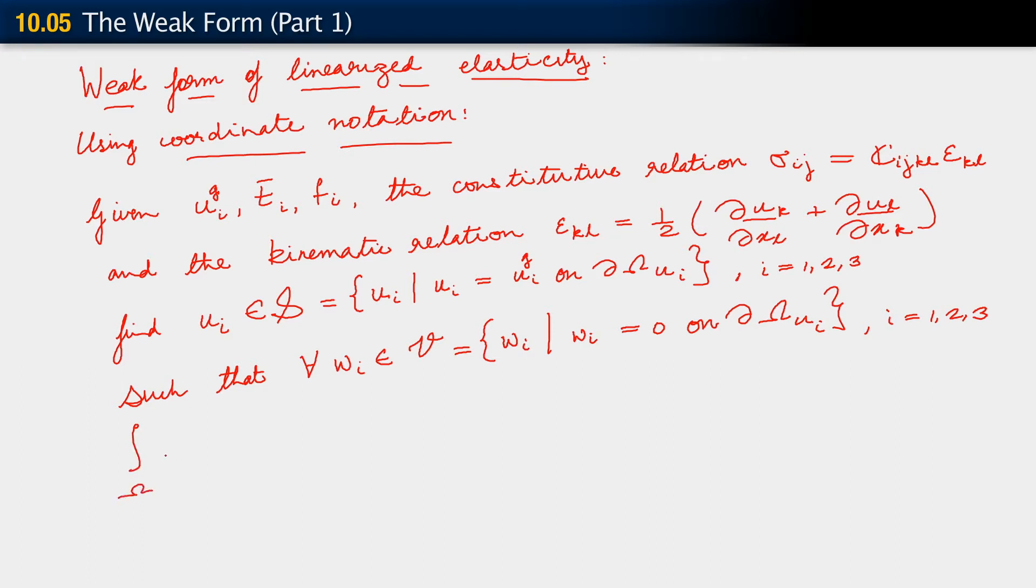The weak form is: integral over omega w_i,j sigma_ij dV equals integral over omega w_i f_i dV plus, now here comes the rub. Because of the fact that our traction boundary condition needs to be specified individually for each component, we need to have a sum i going from one to number of spatial dimensions.